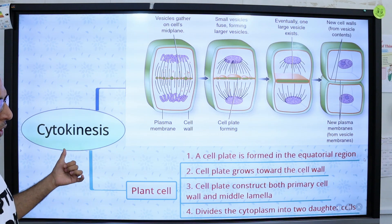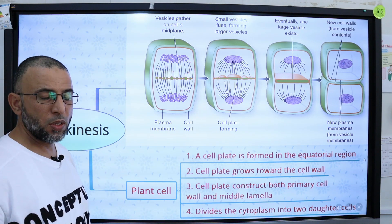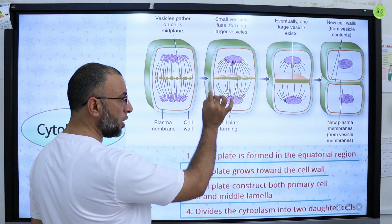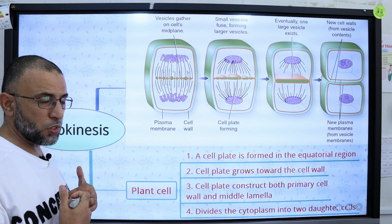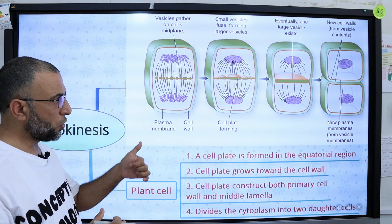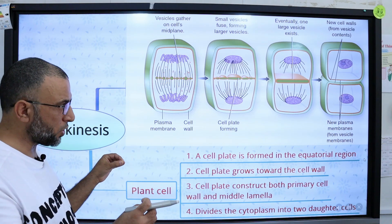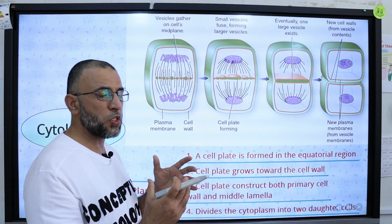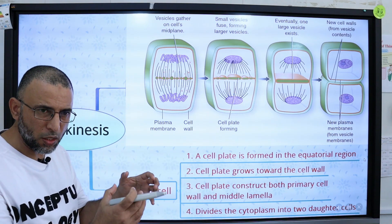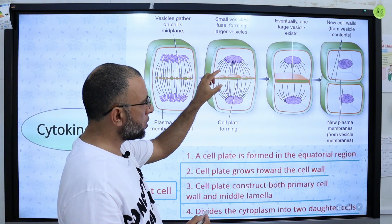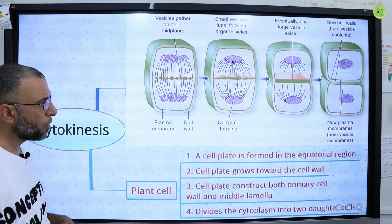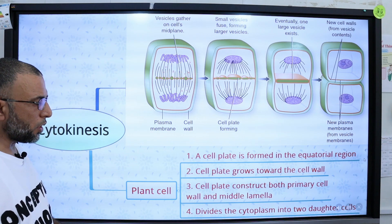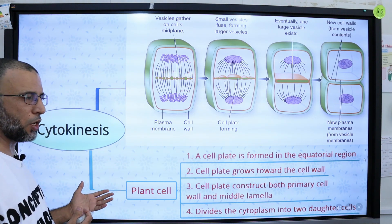In plant cells, cytokinesis takes place with the help of a structure called the cell plate, also known as the phragmoplast. The phragmoplast appears at the middle of the cell and gradually grows toward the cell wall. As it grows, it also produces the primary cell wall and the middle lamella — a cementing layer that holds all plant cells together. The cell plate divides the cytoplasm into two daughter cytoplasms, initiating at the middle and moving outward toward the periphery.